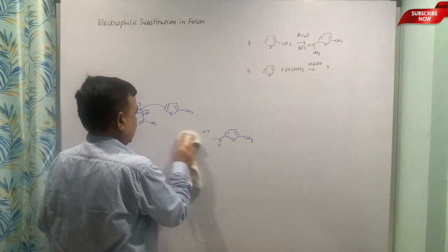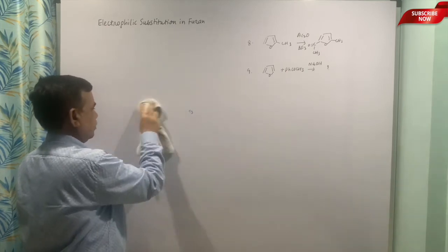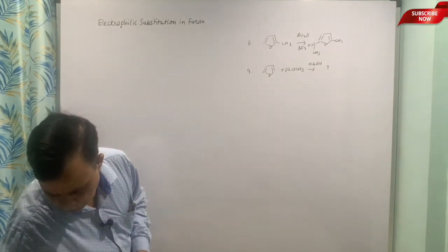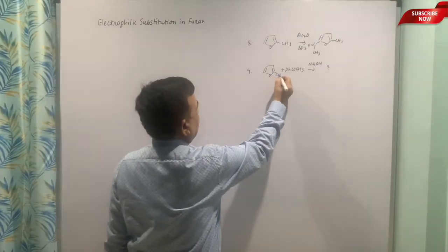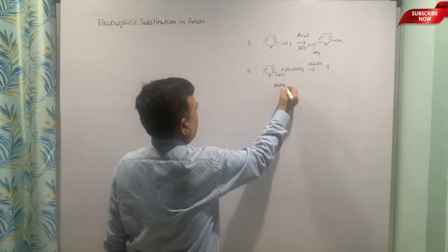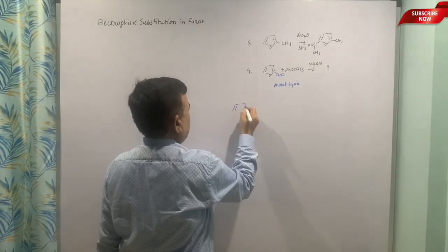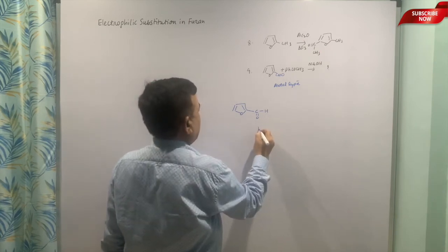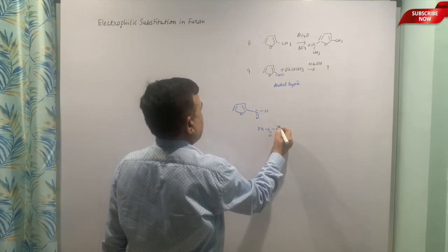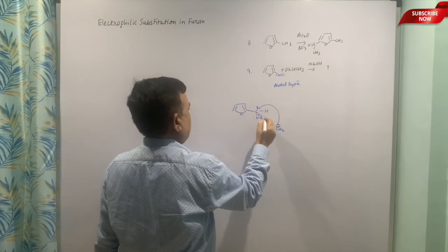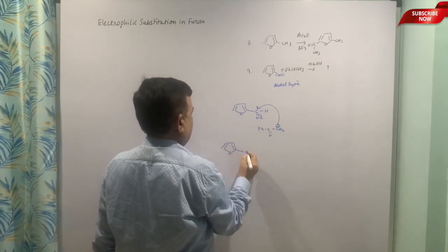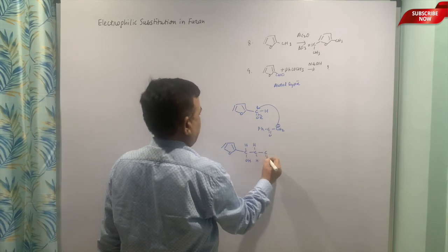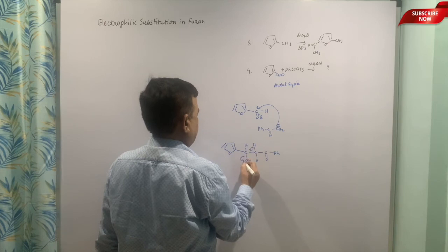The ninth example is about the condensation of acetophenone with furan. Actually it is not furan—let me put it properly—this is aldehyde. So it is aldol-type condensation. And then Ph-COCH2⁻, because the role of NaOH is to abstract the proton. It is aldol-type condensation reaction.